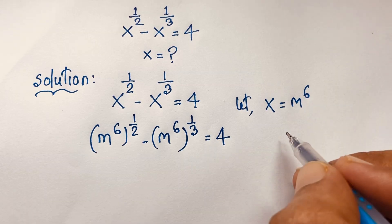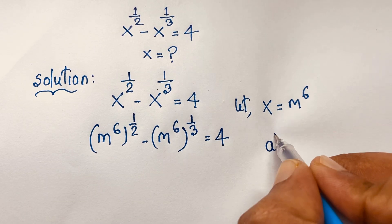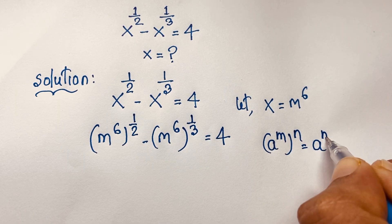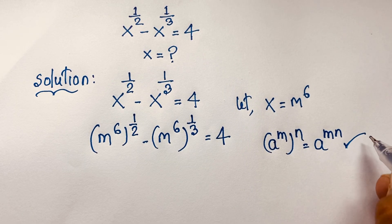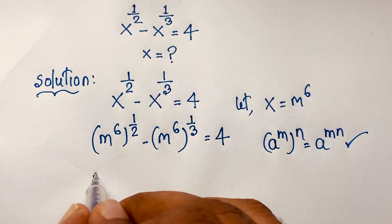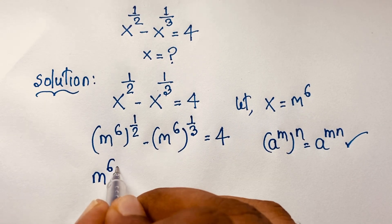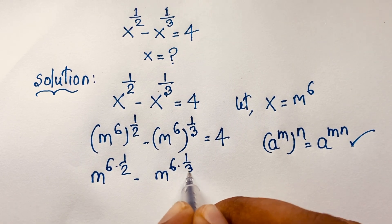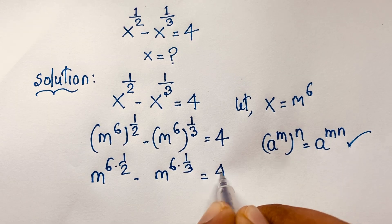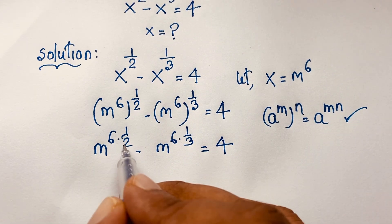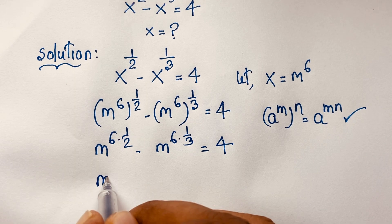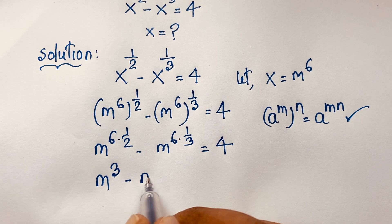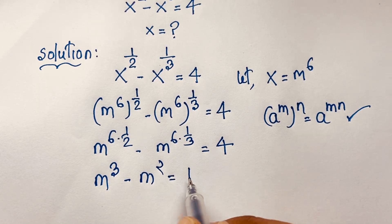Then, according to the exponential formula, we know that a to the power m, whole to the power n, equals a to the power m times n. Applying this formula, it will be m to the power 6 times 1/2, minus m to the power 6 times 1/3, equals 4. So 6 divided by 2 is 3, and 6 divided by 3 is 2. This gives m to the power 3 minus m to the power 2 is equal to 4.